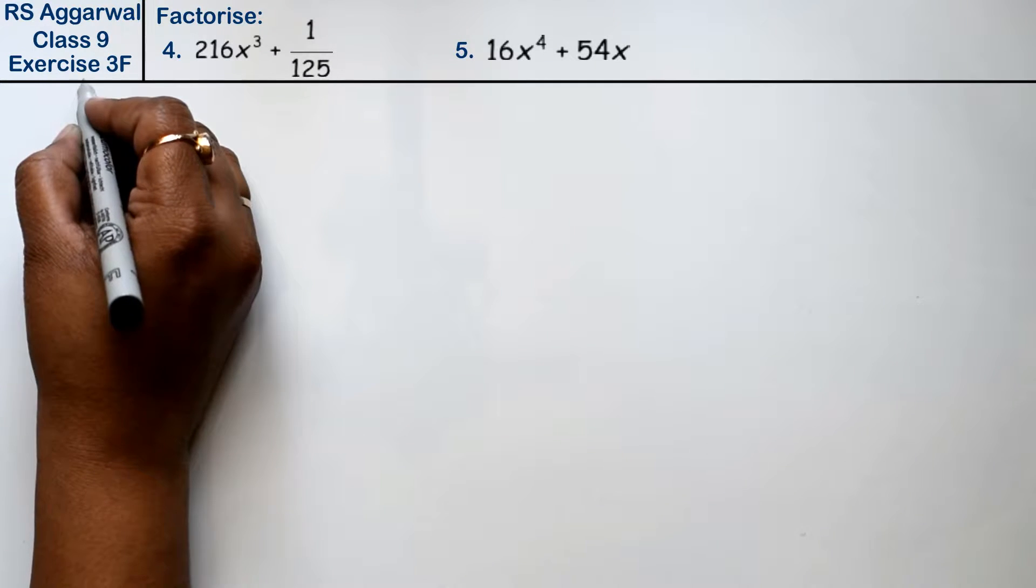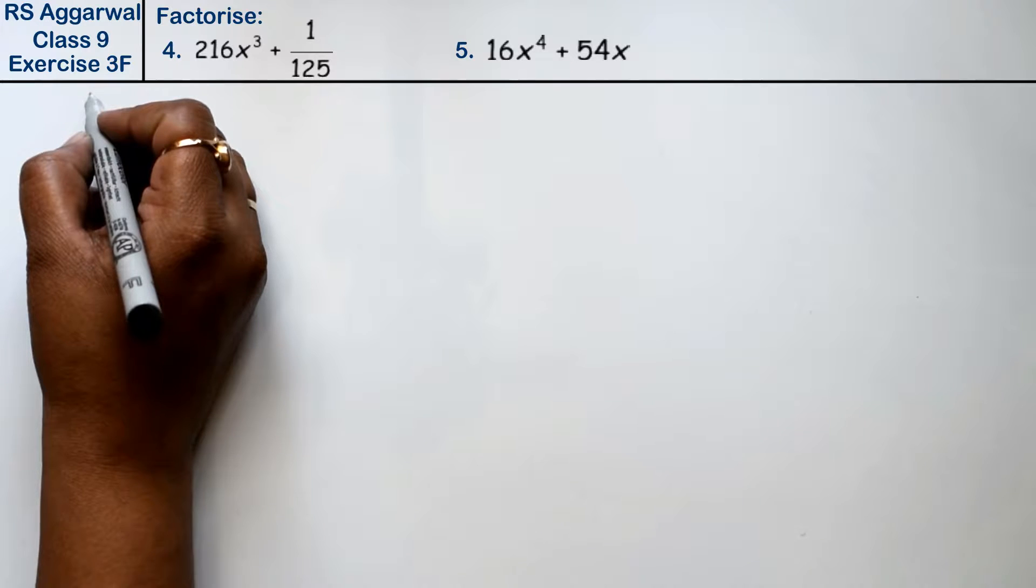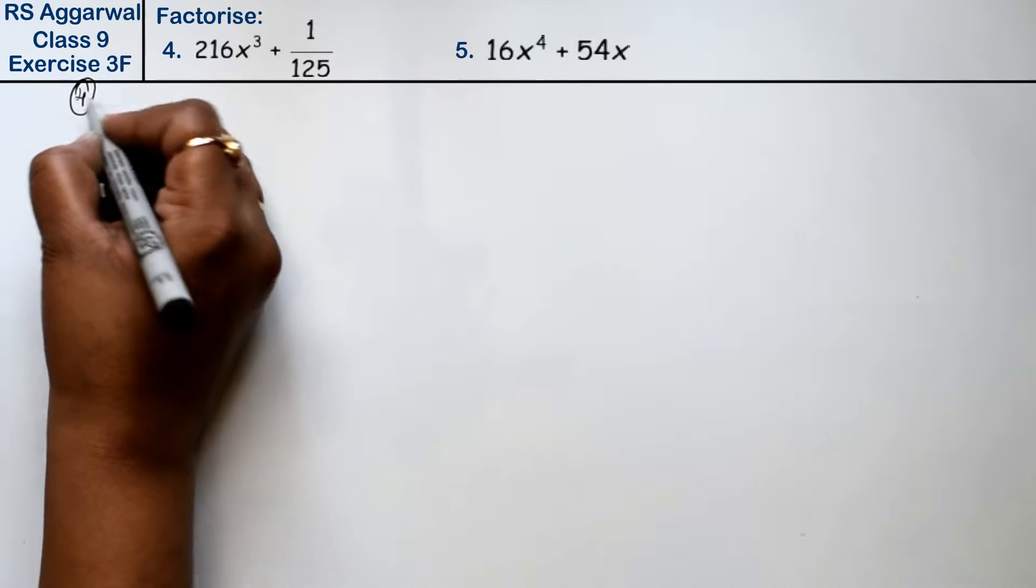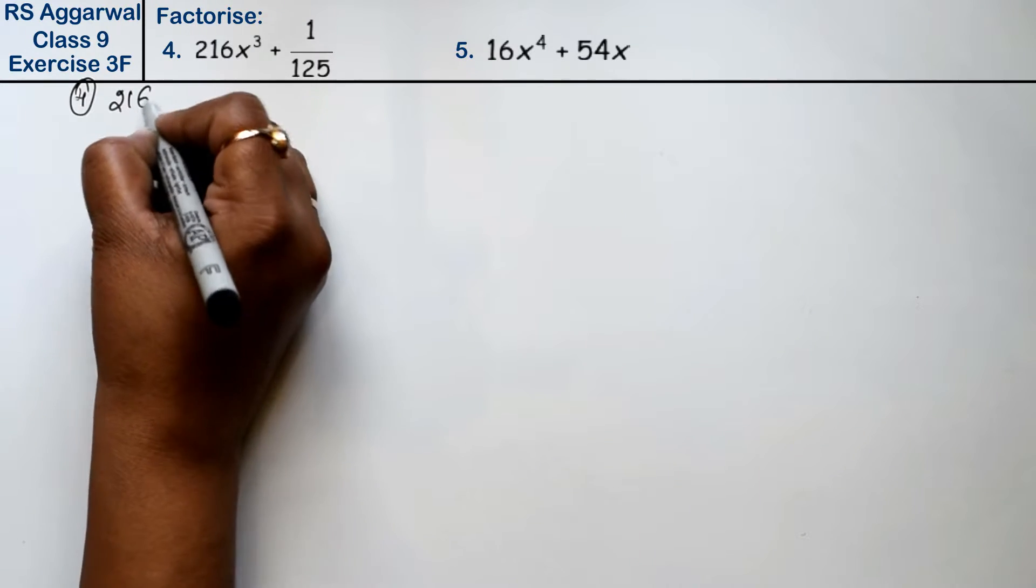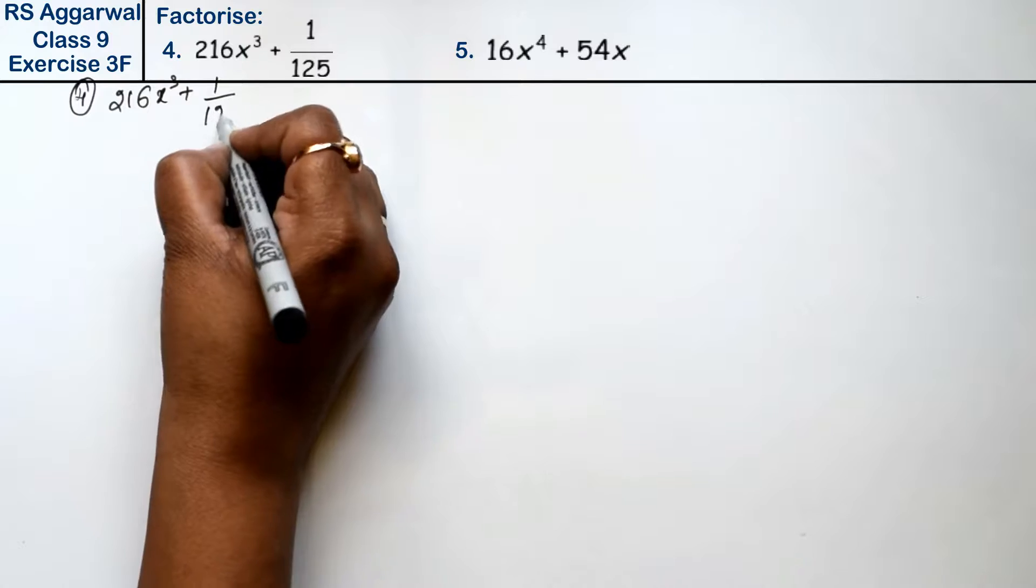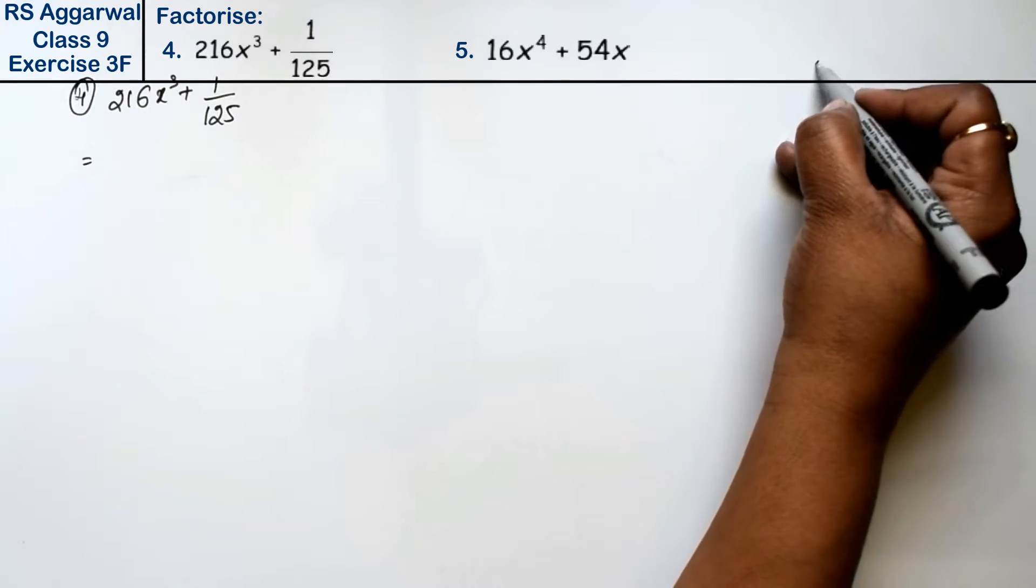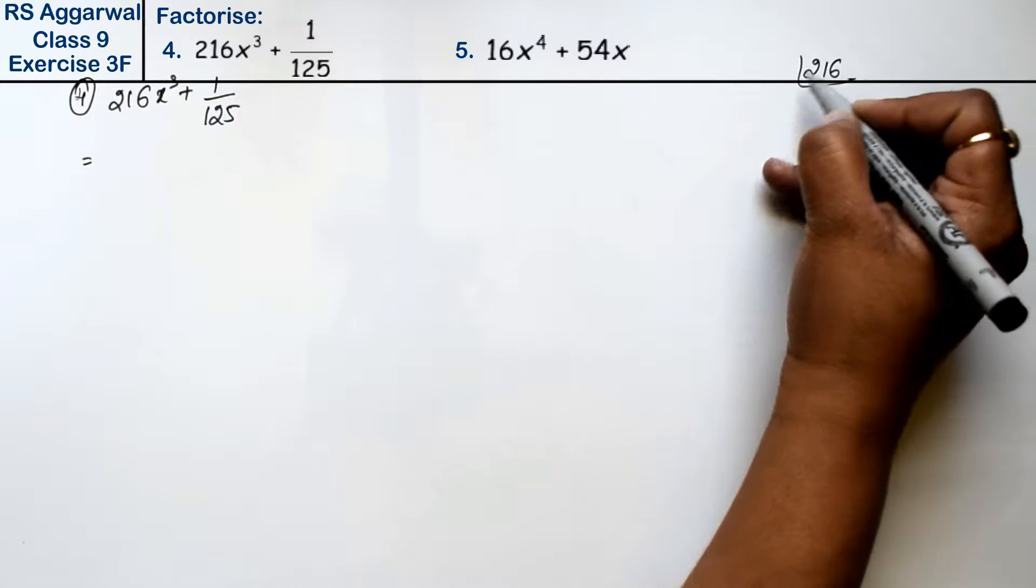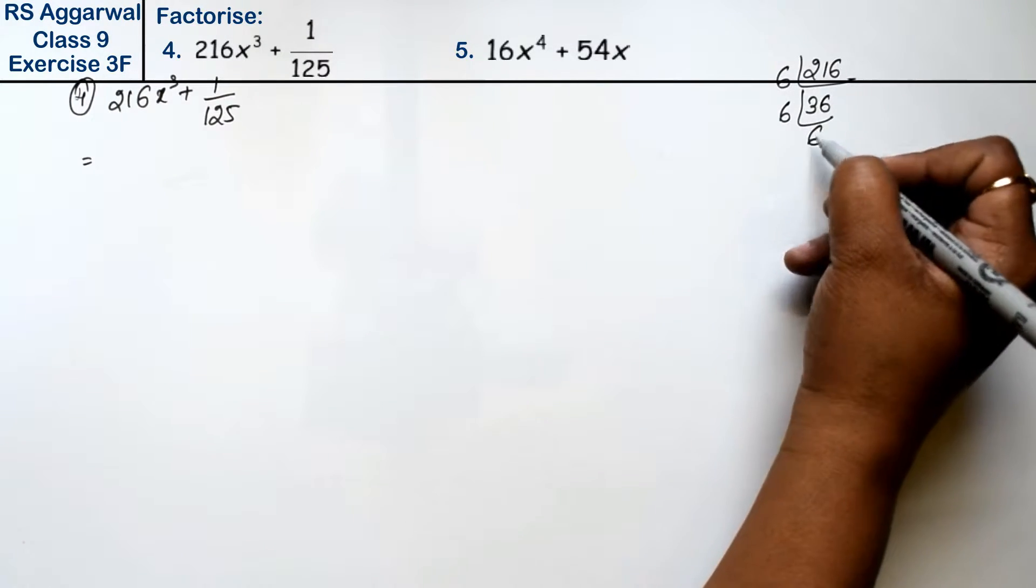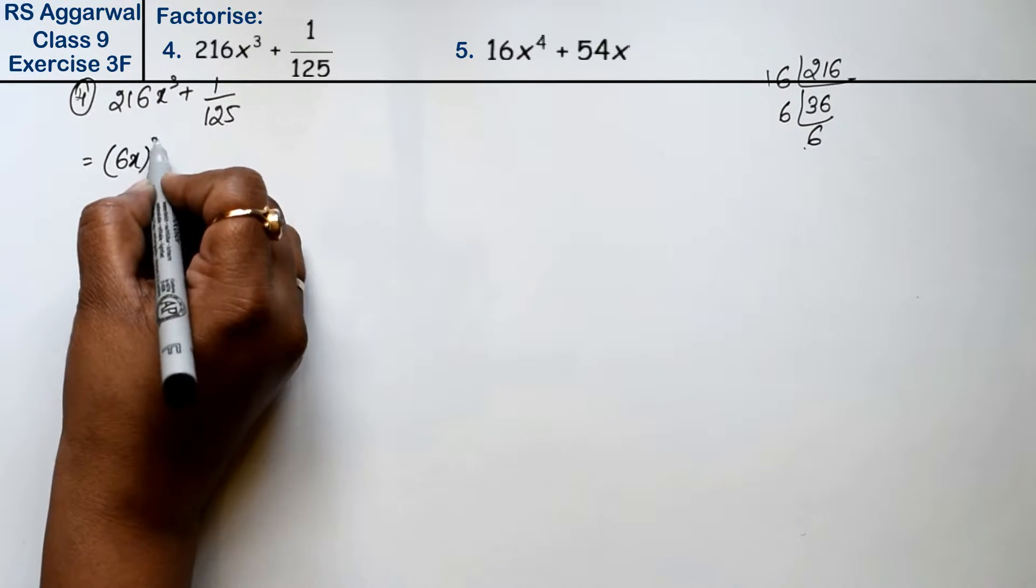Let's do question number 4 of exercise 3F, factorization of polynomials. Question number 4 is 216x cube plus 1 upon 125. We can write this as 6x cube plus 1 upon 5 whole cube.